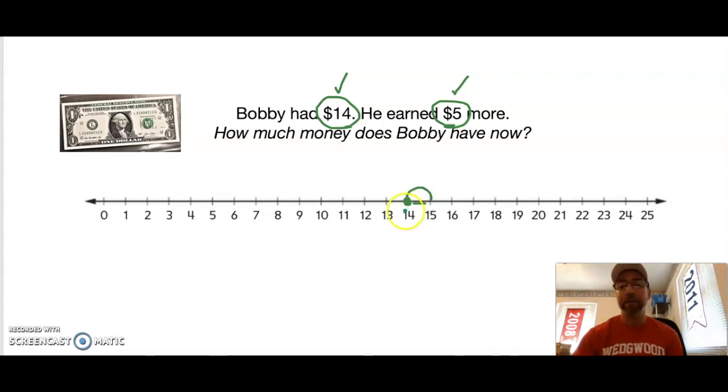Remember when we hop, we're really counting the spaces. One means I've counted one space, I went from 14 to 15. Two, I counted another space from 15 to 16. Three, I counted another space. Four, I counted another space, and five, I counted my last space. I like to put a dot there because that means I found the answer to my problem.